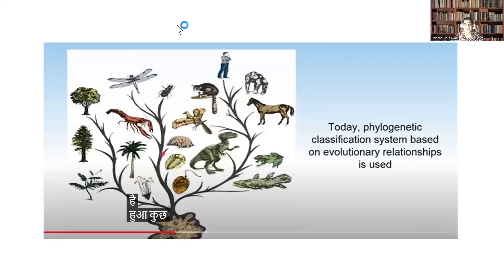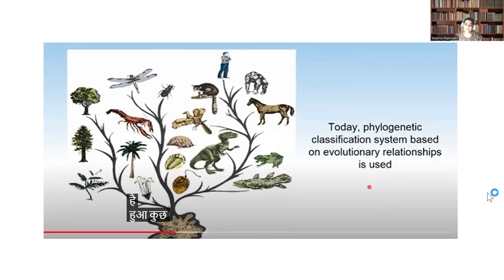When different types of organisms originate from a single ancestor but are placed in separate groups due to differences in characteristics from evolution, yet remain related in some characteristics, we call this a phylogenetic relationship. This type of classification is called phylogenetic classification and is mainly used to study evolutionary relationships.